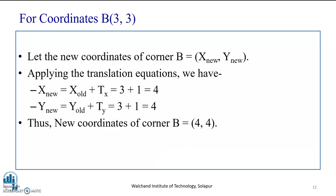We continue this for the next coordinate, that is B, which is (3, 3). Let the new coordinate of corner B be x-new, y-new. Applying the translation equation, we have x-new equal to x-old plus Tx, that is 3 plus 1. Y-new is equal to y-old plus Ty, equal to 3 plus 1, that is 4. Thus, the new coordinates of corner B is equal to (4, 4).